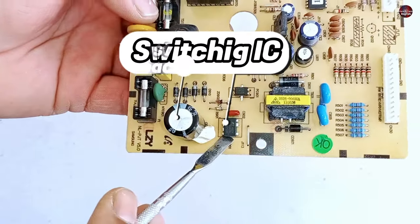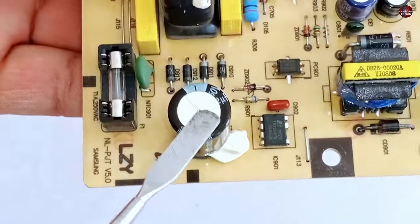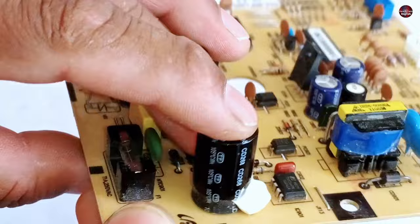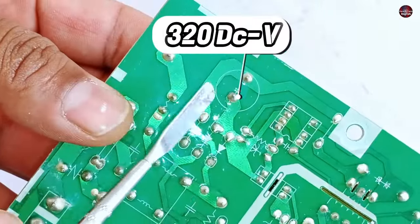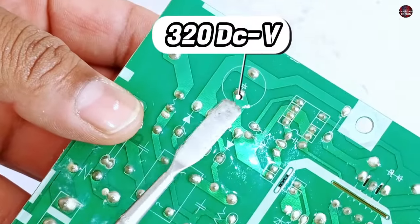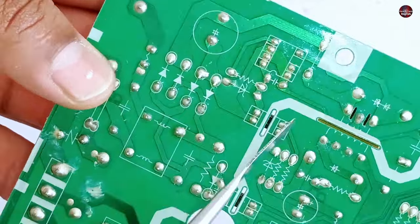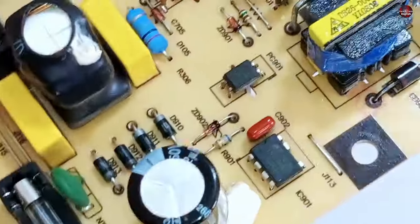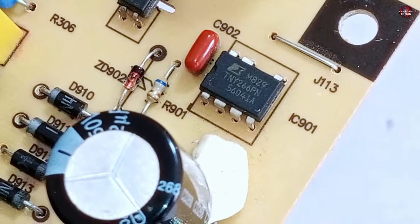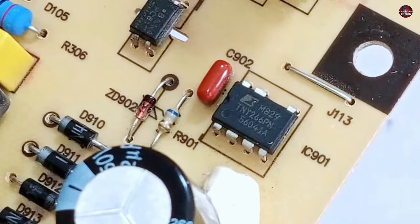A switching IC and a boosting capacitor are mounted next. As the voltages are converted from AC to DC, 320 DC volts pass through this capacitor. Then, this turns on the DC chopper. The number of the switching IC is TNY266PN. Let's talk about its function now.